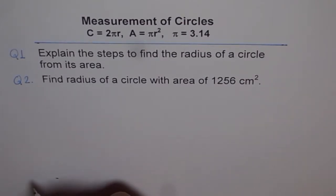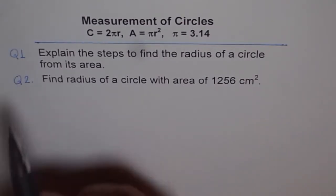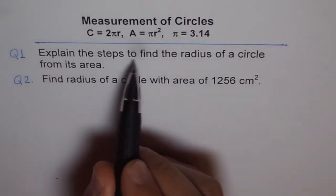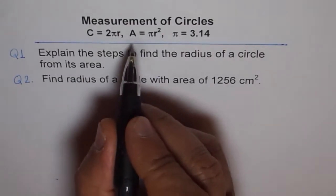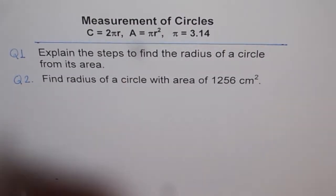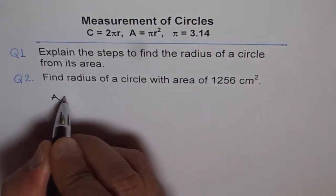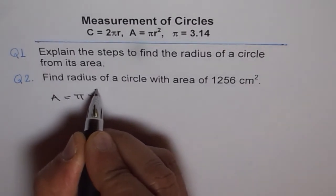Here is how I am going to do it. Question 1: Explain the steps to find the radius of a circle from its area. We know area of a circle is pi r square. We know area A = πr².